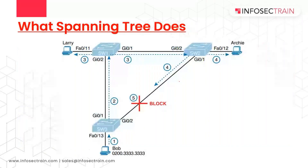Spanning Tree Protocol prevents loops by placing each switch port in either a forwarding state or a blocking state.